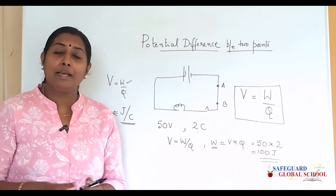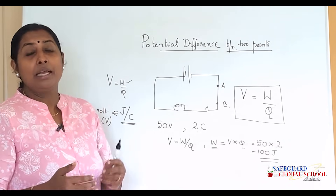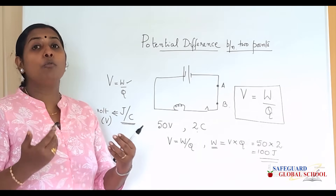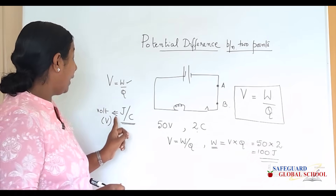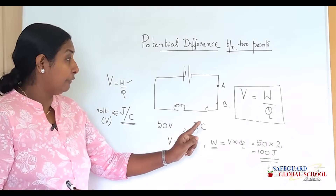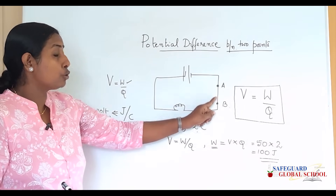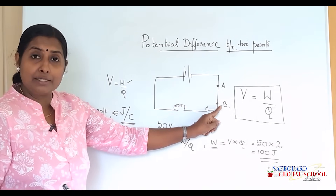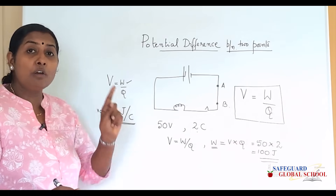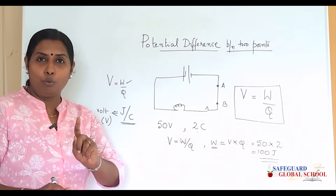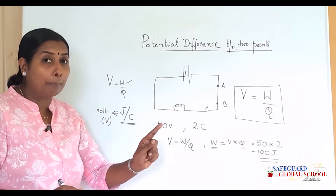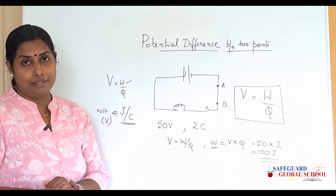There can be a question: define 1 volt. One volt is the potential difference maintained between two points in a circuit when 1 joule of work is done to move a charge of 1 coulomb between these points.